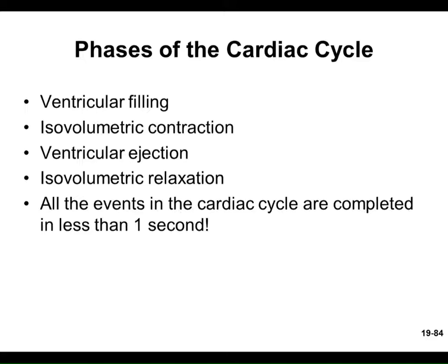You've got the EKG picture — you know what it means in terms of the conduction system: the SA node, AV node, bundle fibers, and Purkinje fibers. Now we figure out what's actually happening in the heart. We'll talk about the phases of the cardiac cycle — dealing with the movement of blood. The ventricles are the focus because they are the more muscular chamber.